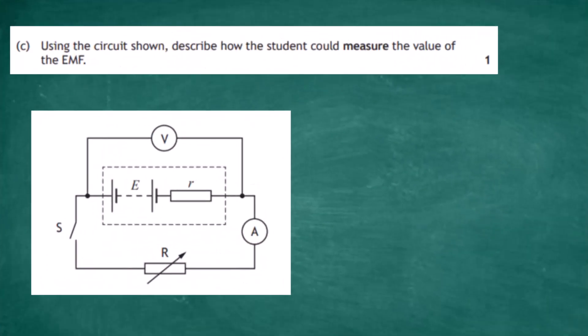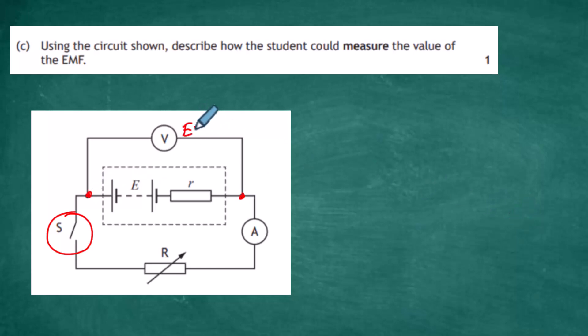Part c: using the circuit shown, describe how the student could measure the value of the EMF. The EMF is measured using a voltmeter across the terminals of the battery when no current is drawn. Keep the switch open so no current is taken from the battery — the ammeter reads 0 amps — and take the voltmeter reading across the terminals. That reading is the EMF.